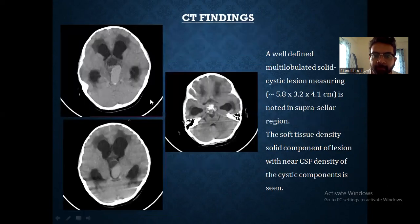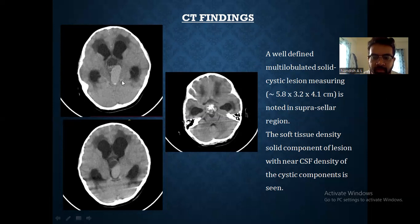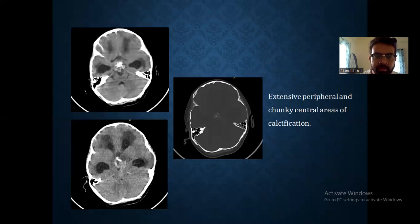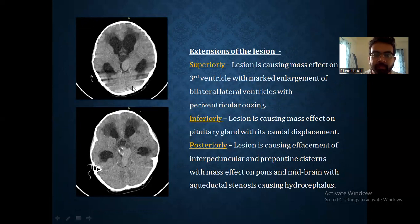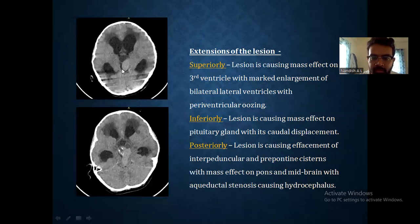Coming to the CT findings: a well-defined multi-lobulated solid cystic lesion measuring 5.8 x 3.2 x 4.1 cm is noted in the suprasellar region. The soft tissue density component of the lesion and the cystic component are noted, along with extensive peripheral and chunky central areas of calcification. Superiorly, the lesion is causing indentation on the third ventricle with marked dilatation of bilateral lateral ventricles with periventricular seepage. Inferiorly, the lesion is causing mass effect on the pituitary gland and its caudal displacement.